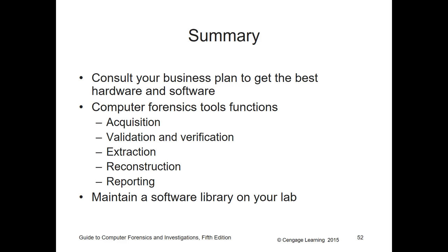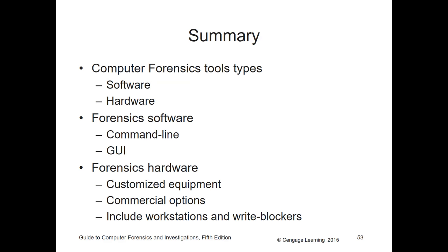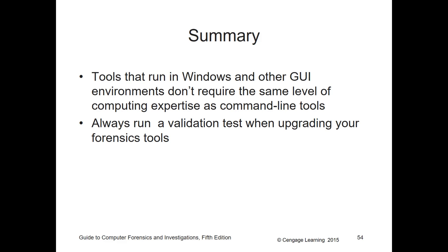In summary, you need a business plan and must align with your organization's structure. The five main categories to keep in mind are acquisition, validation, verification, extraction, reconstruction, and reporting. Understand the different types of hardware and software — GUI and command line — and the different types of forensics hardware. Ultimately, your tool selection will be based on your experience, your organization, and your budget. That's chapter six in a nutshell — please let me know if you have any questions.